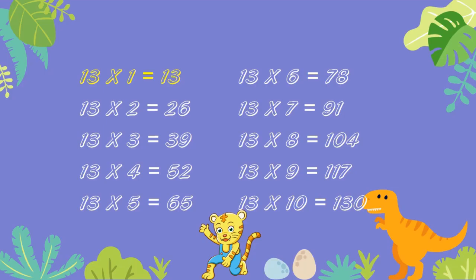13 ones are 13. 13 twos are 26. 13 threes are 39. 13 fours are 52. 13 fives are 65. 13 sixes are 78. 13 sevens are 91. 13 eights are 104. 13 nines are 117. 13 tens are 130.